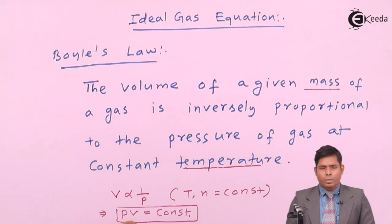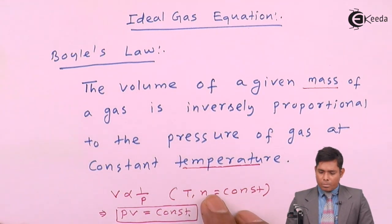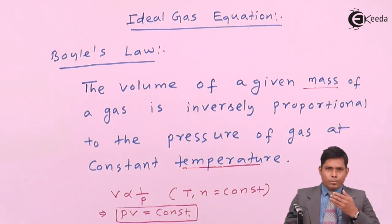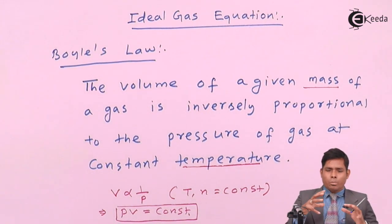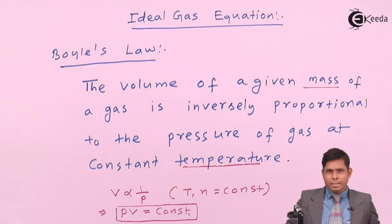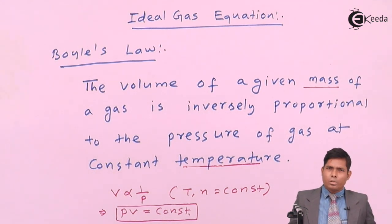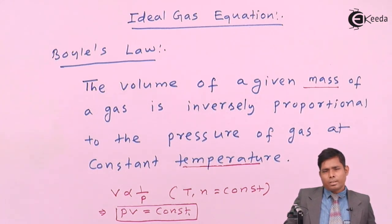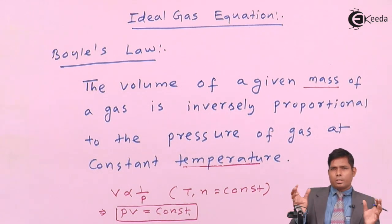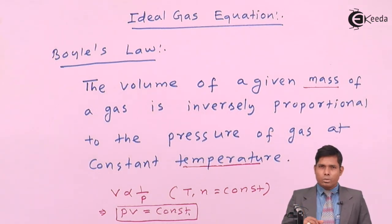Boyle's Law is also known as the isothermal equation, because in an isothermal process the temperature remains constant. The number of moles of gas must also remain constant — the amount of gas present should not escape from the system, and you should not add more gas into the system. Then only this law will be valid.